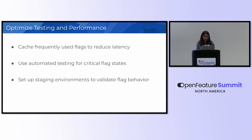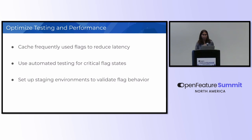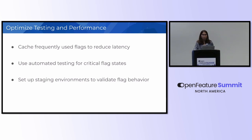Use automated testing for critical flag states. You should take help of automation to cover the critical flag states. There are also many integration tools that could help with testing. Finally, set up staging environments to validate flag behavior — setting up environments to simulate feature flag states can help you see the performance compatibility of the feature flags.